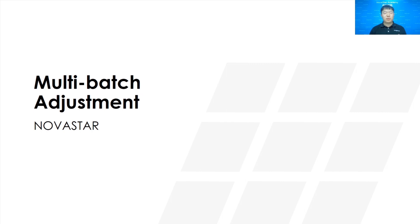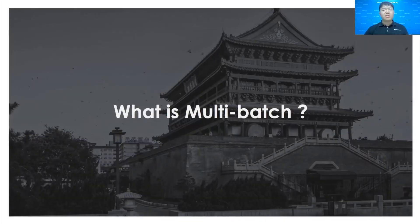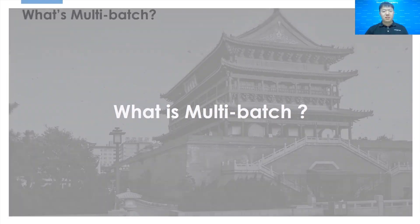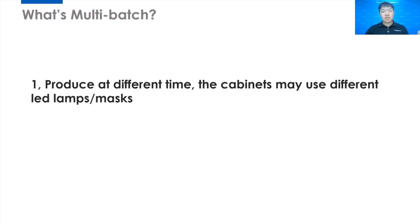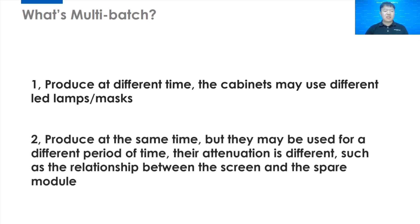Hey guys, I'm Darren from Novostar Training Group. Today we're going to talk about multi-batch adjustment. First, what is a multi-batch? There are two situations: first, cabinets produced at different times may use different LED lamps and even different colored masks. Second, cabinets produced at the same time but used for different periods have different attenuation — such as the relationship between the screen and spare modules.